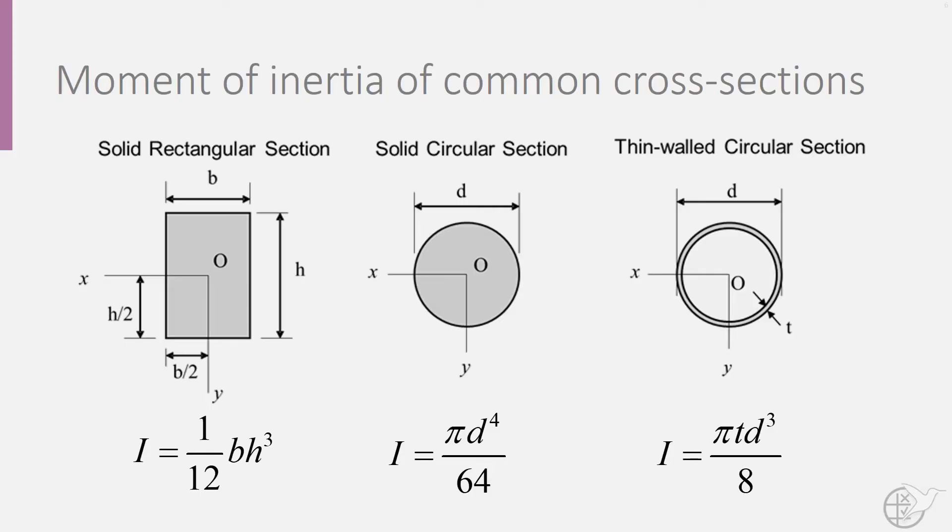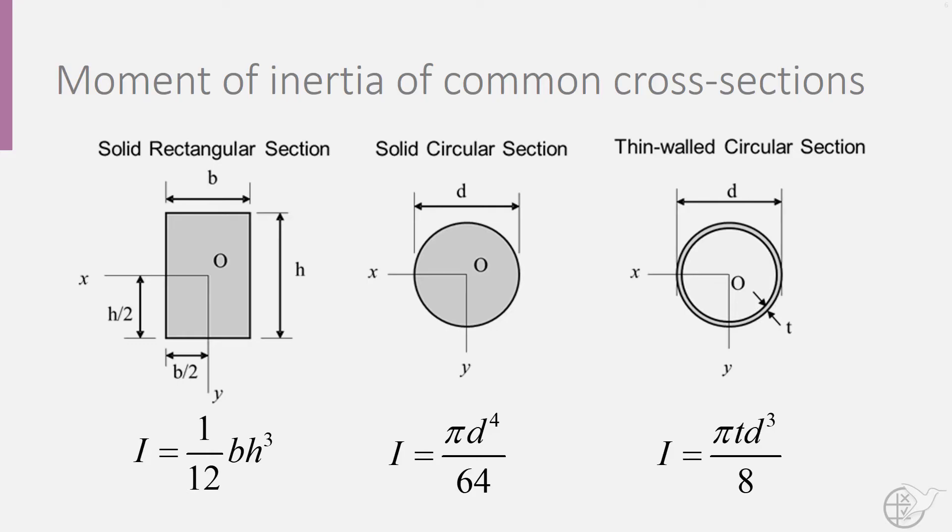We will use the following three formulas for our bicycle example. Let's start with a solid square cross-section of width 24 mm as our baseline. Using our formula for the moment of inertia of a square section, we can obtain the following value for the moment of inertia.